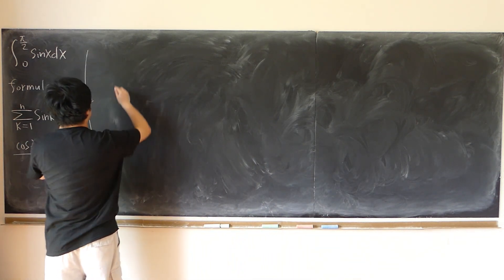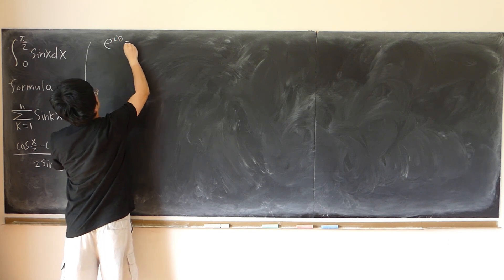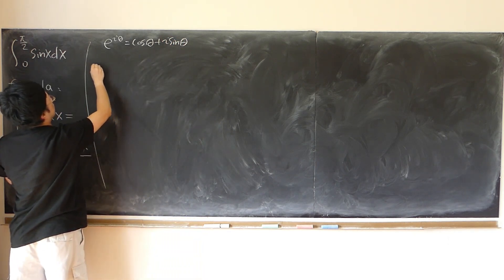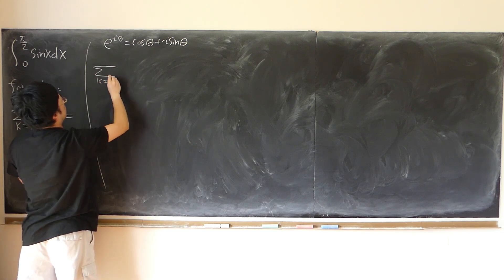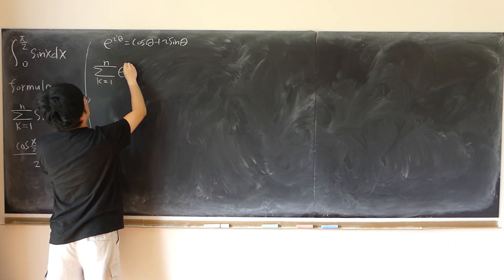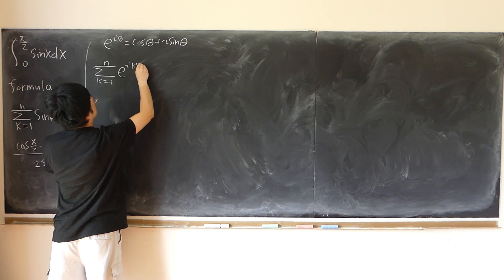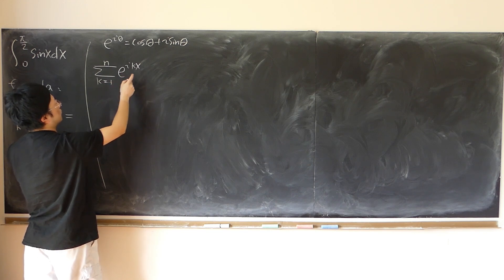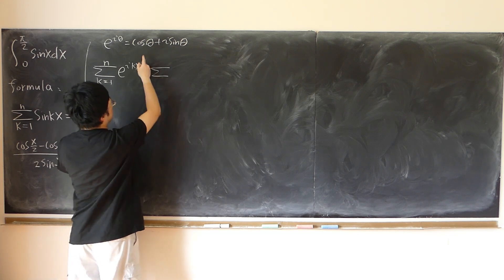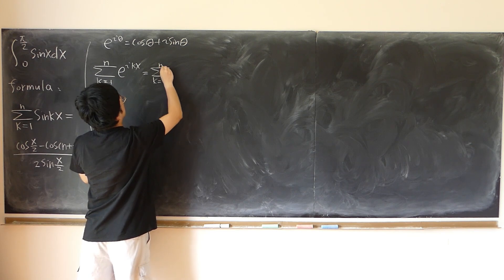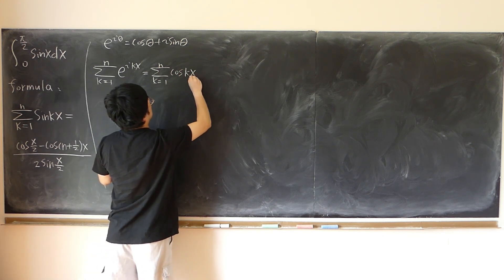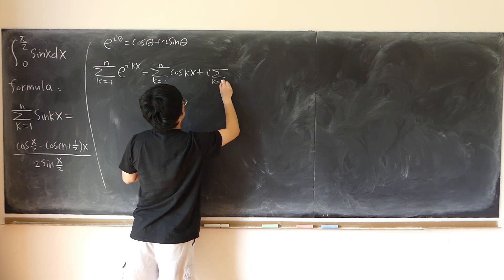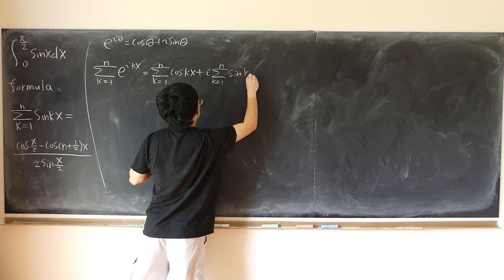We know that the complex number e to the power of i theta equals cosine theta plus i times sine theta. So if we sum from k equals 1 to n of e to the ikx, that gives us e^{ix} plus e^{2ix} plus e^{3ix} and so on, which equals the real part — the sum from k=1 to n of cosine kx — plus i times the imaginary part, the sum from k=1 to n of sine kx.